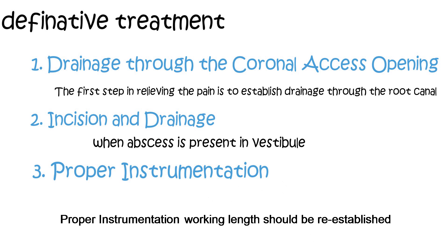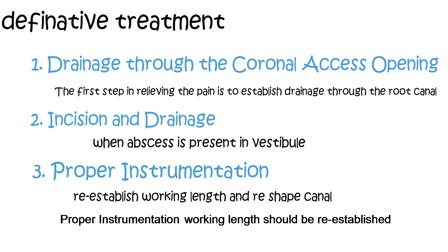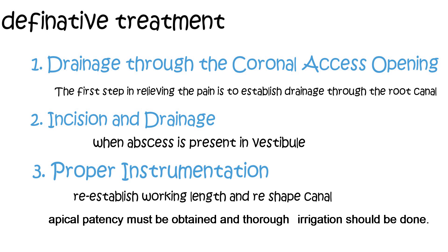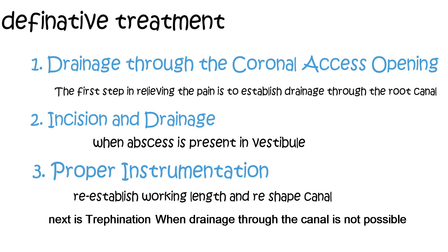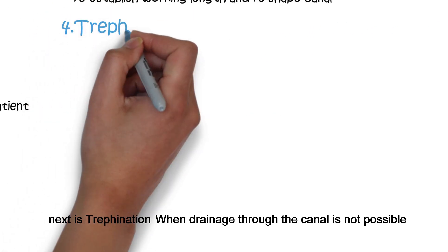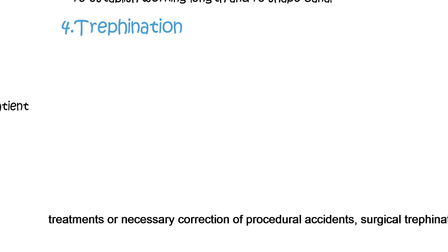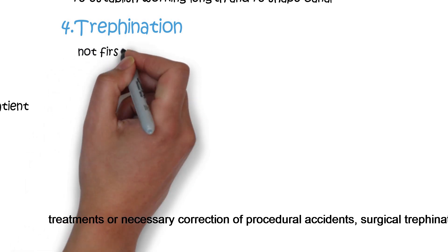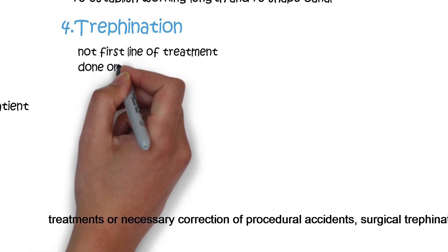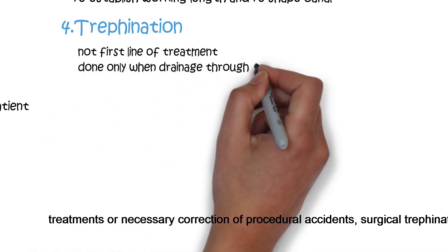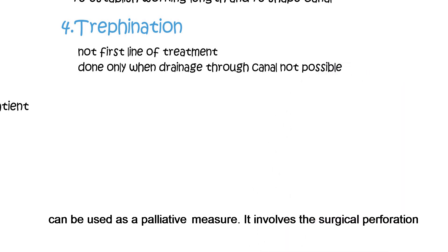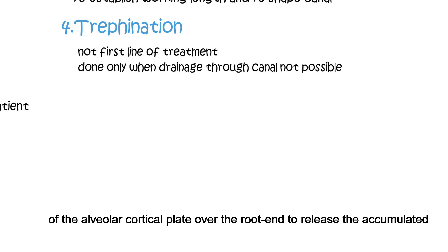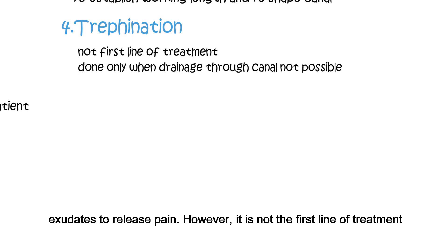Proper instrumentation is also required: working length should be re-established, apical patency should be obtained, and thorough irrigation should be done. Next is trefinition — when drainage through the canal is not possible due to restorative issues or in cases of failing treatment or procedural accidents, a surgical trefinition can be used as a palliative measure. It involves surgical perforation of the alveolar cortical plate over the root end to release accumulated exudate and relieve pain. However, it is not the first line of treatment.